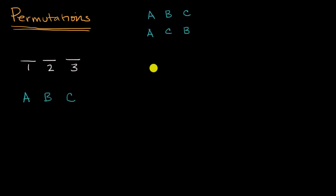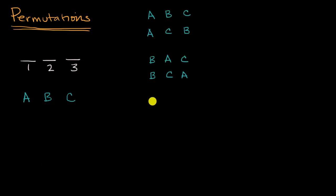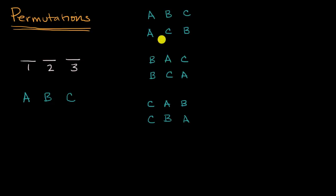Now let's put someone else in seat number one. With B in seat number one, I could put A in the middle and C on the right. Or I could put B in seat number one and swap A and C: C and then A. And then if I put C in seat number one, I could put A in the middle and B on the right, or B in the middle and A on the right. These are all of the permutations, and you can see there are six.